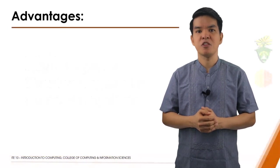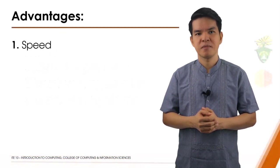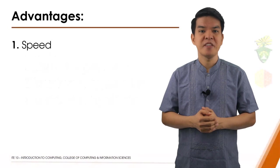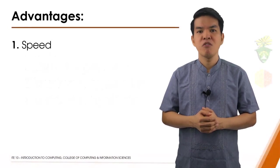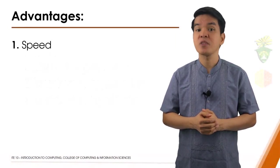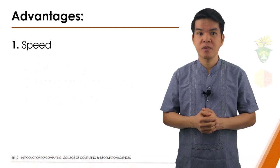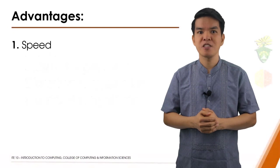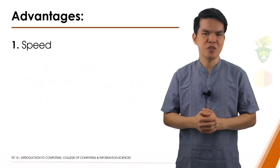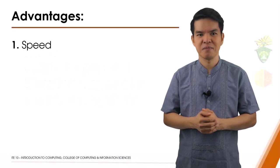The first advantage is speed. When data, instructions, and information flow along the electronic circuit in a computer, they travel at incredibly fast speeds. Many computers process billions or trillions of operations in a single second.